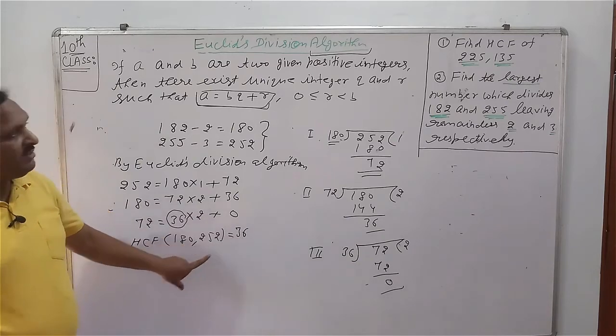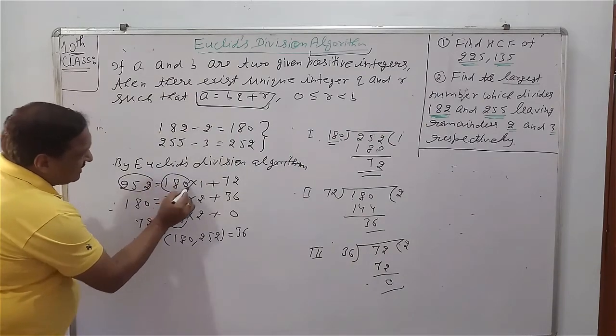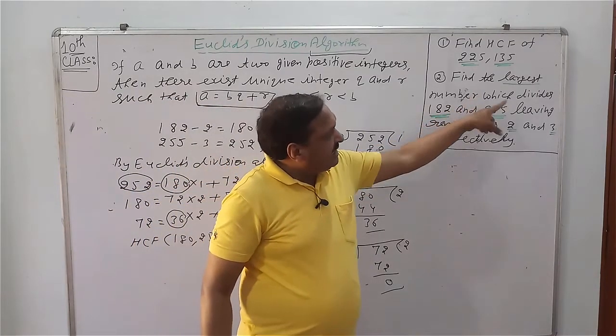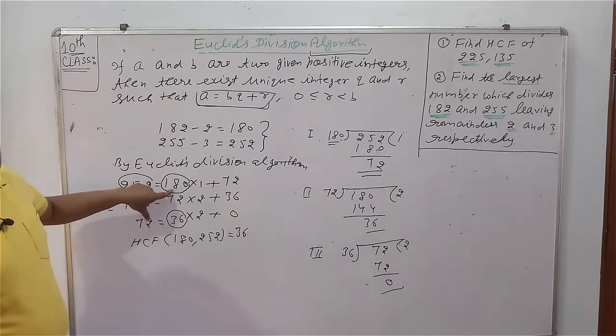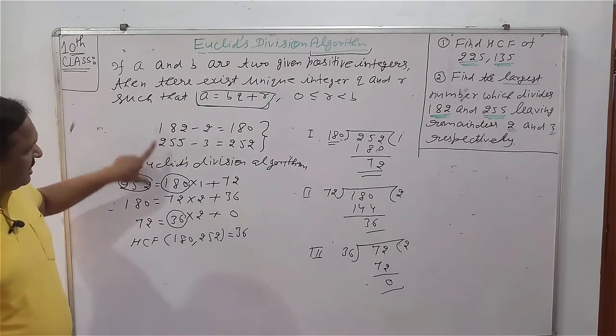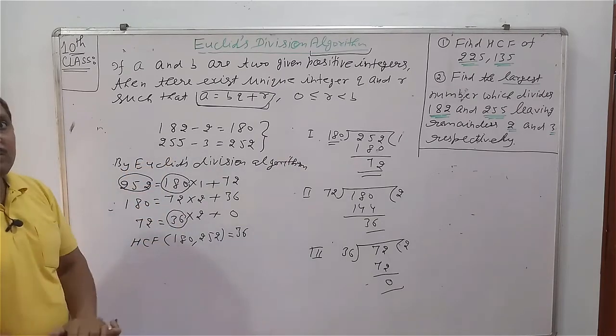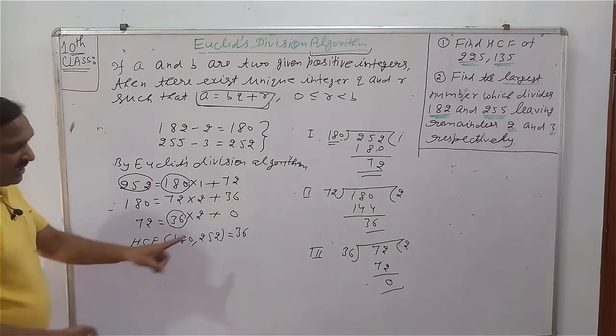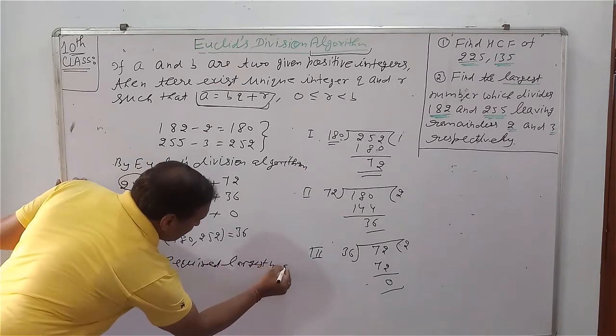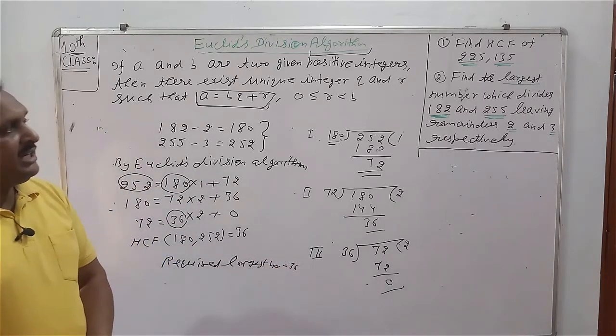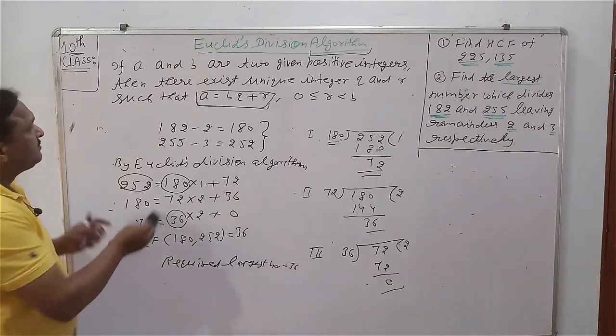This is the largest number that divides 180 and 252 exactly. But the largest number which divides these numbers leaving remainders 2 and 3, this 36 divides 180 exactly, it means 182 when divided by 36 will leave remainder 2, and 255 will leave remainder 3. So you can say 36 is that required number, required largest number when dividing 182 and 255 we get 2 and 3 as remainder.